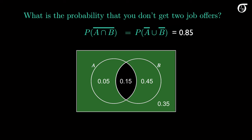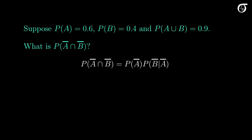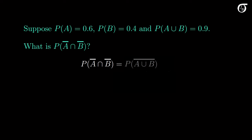We've illustrated De Morgan's laws through Venn diagrams and a basic probability example. Now let's look at how De Morgan's laws might make a probability calculation easier. Given that the probability of event A is 0.6, the probability of event B is 0.4, and the probability of their union is 0.9, suppose we need to find the probability of the intersection of A complement and B complement. Using De Morgan's laws, we recognize that the intersection of the complements is the complement of the union. So the probability we're looking for is 1 minus the probability of the union of A and B, which works out to 0.1.